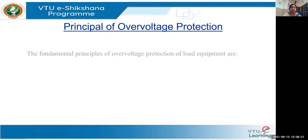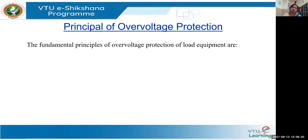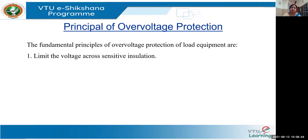Let us learn about the fundamental principles of overvoltage protection for load equipment. Why do we require these kinds of protections? First, it is required because the sources of overvoltage can be lightning strikes — they can be internal or external. When these occur, we need to control and limit these overvoltages using certain protective devices. These overvoltages may cause malfunctioning of equipment or damage sensitive insulations. That is the main reason why we need protective devices for overvoltage.